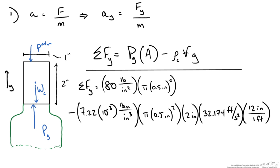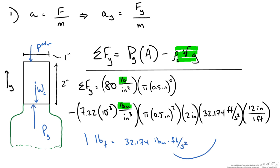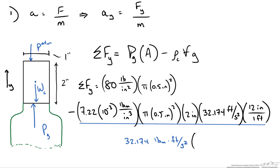One important thing: the right-hand term — rho times V times g — uses pounds mass, whereas the left-hand term — pressure times area — uses pound force. We need a conversion between pound force and pound mass. We know that one pound force equals 32.174 pound mass times feet per second squared. So we divide the weight term by 32.174 lbm·ft/s² and also convert feet to inches to keep all units consistent.